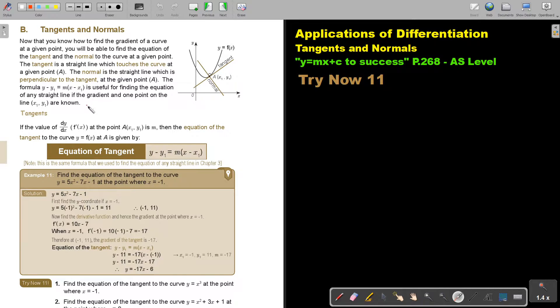Just like we did when we were doing the equation of a straight line. Tangents. If the value of dy/dx or f'(x) at the point is m, then the equation of the tangent to the curve at A is given by this equation of the tangent. Note that this is the same formula that we use to find the equation of any straight line like we did in chapter 3.